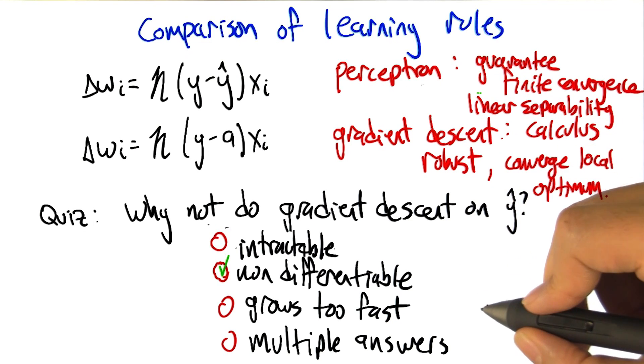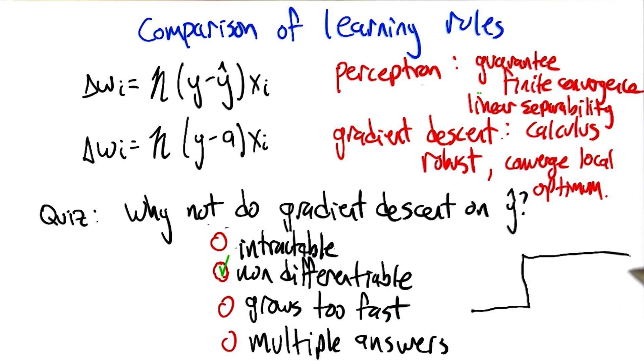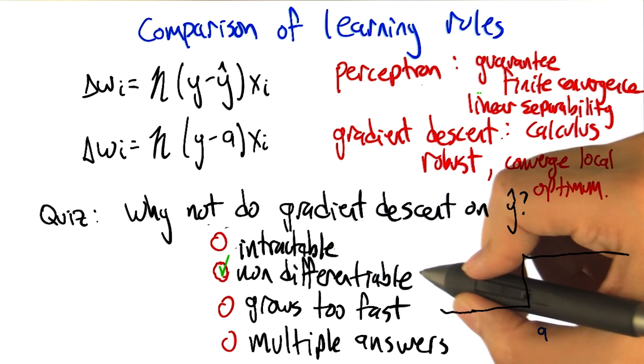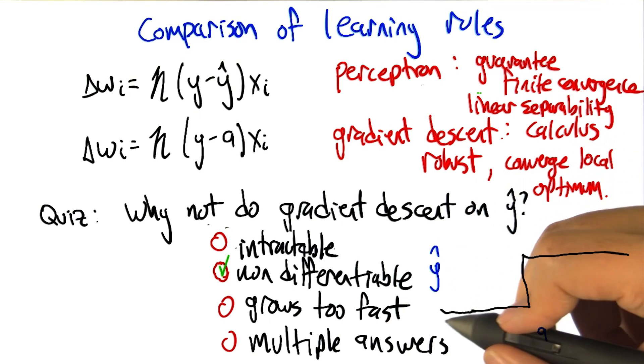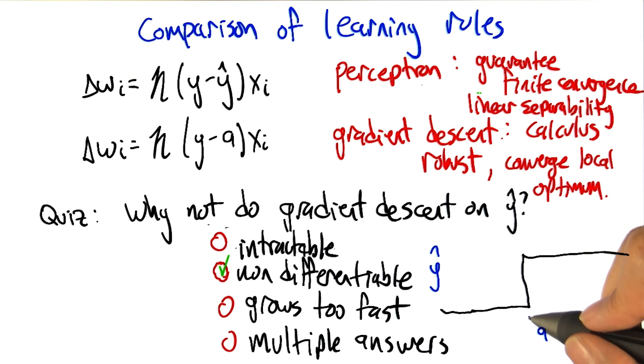So this activation thing, the change from activation to y hat has this big step function jump in it, right, at zero. So once the activation goes positive, actually at zero, it jumps up to one and before that it's not.